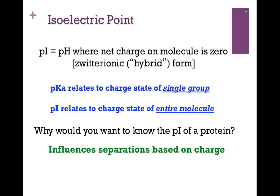Remember, if we're looking at pH versus PK, if pH is equal to PK, it's half in one form and half in the other. So in this case, for the overall molecule, if pH equals PI, the net charge is zero. So remember, the PK relates to the charge state of a single group. The PI relates to the charge state of the entire molecule.